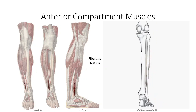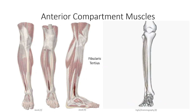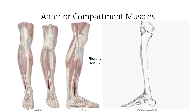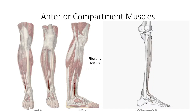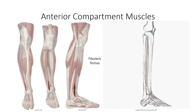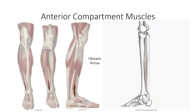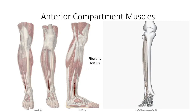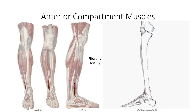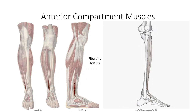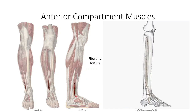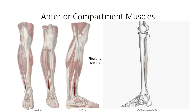One final muscle to consider in this group is the fibularis tertius. It's an unfortunate nomenclature since it shares its prefix name with the muscles of the lateral compartment. Make no mistake though — this muscle's origin and neurovascular supply is more in line with the anterior compartment muscles, which is why we group it here. A pretty small muscle, originating off the inferior portion of the anterior surface of the fibula, just inferior to the extensor digitorum longus muscle. It projects laterally to insert on the dorsal surface of the base of the fifth metatarsal bone, making it a weak dorsiflexor and everter of the foot.